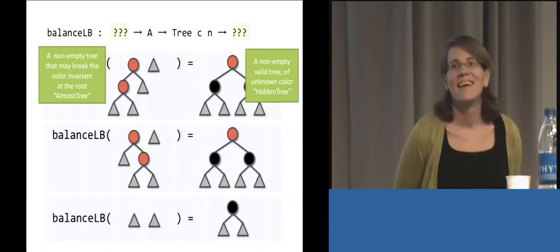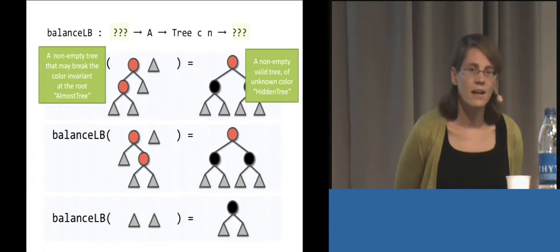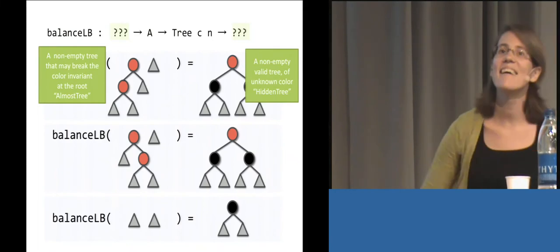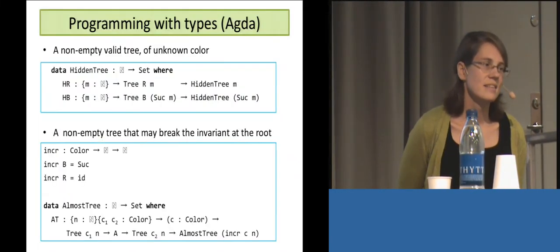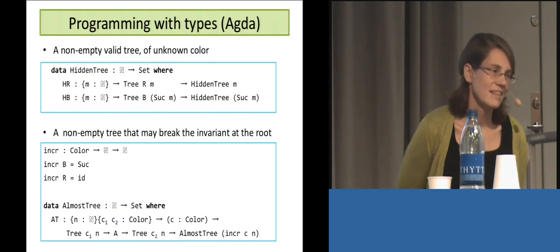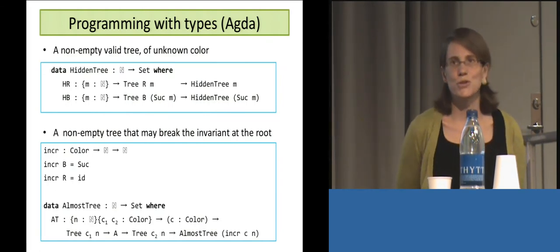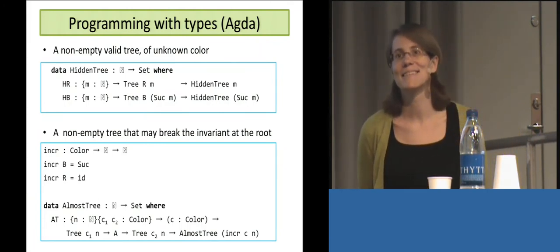I have a question about the types. So it's the cool question that Andrew asked. So he wondered if you couldn't write hidden tree with only one constructor. Yes. I wonder if he cannot write almost tree with only two constructors and then not have the singleton type or the type family at all. I'm sure you could. I wanted to show type families. Oh, okay.